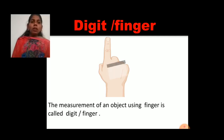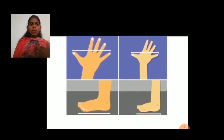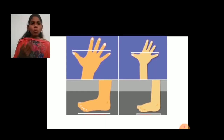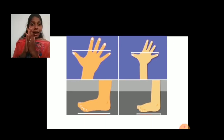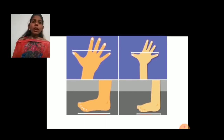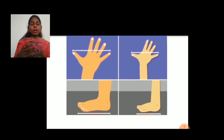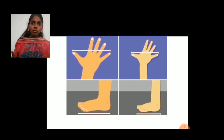Sometimes when we measure using our body parts, the distance or the answer is different. Why different? Because my hand is bigger than yours. If you measure your maths textbook, maybe it is two handspans long. But if I measure, it is about one and a half handspans long, because my handspan is bigger than yours. The same applies to foot span — your foot is smaller than my foot. So when we measure things using our body parts, we get different answers. Hence, this measurement is not uniform.